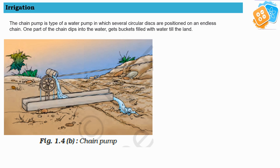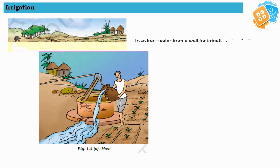The second irrigation system is the chain pump. The chain pump is a type of water pump in which several circular discs are positioned on an endless chain. One part of the chain is dipped into the water from the reservoir, and as the filled buckets come up, the pulley helps the bucket get emptied and the water flows to the field.